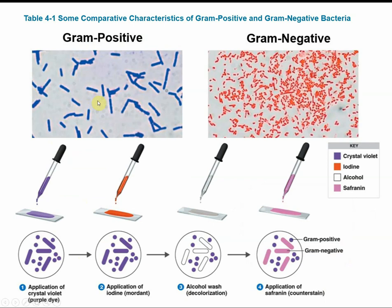In the four steps of the gram stain: you apply the crystal violet, then you apply the iodine — considered the mordant of the gram stain — which has a chemical reaction causing those crystals to form. The crystals get trapped in the thick peptidoglycan of the gram-positive. During the alcohol wash or decolorization, it dehydrates the peptidoglycan, trapping those crystals, while in gram-negative it dissolves the outer membrane. So gram-negative cells now have no violet crystals — they are essentially decolorized.